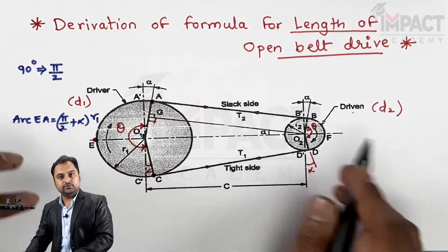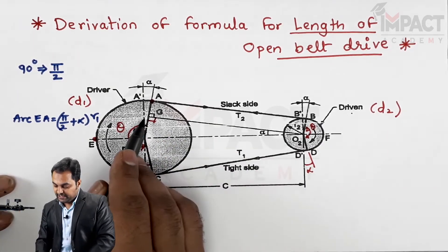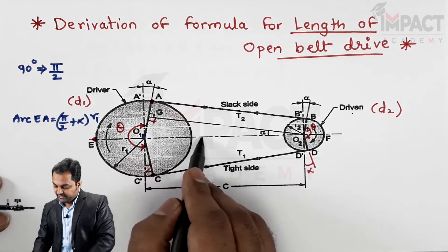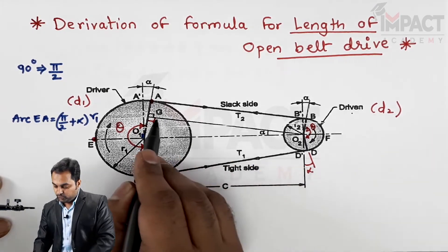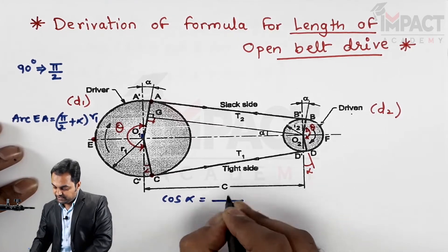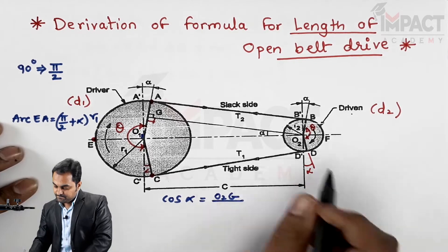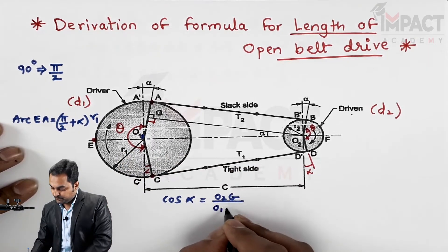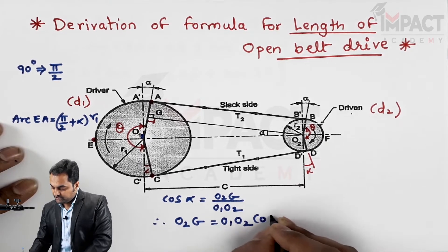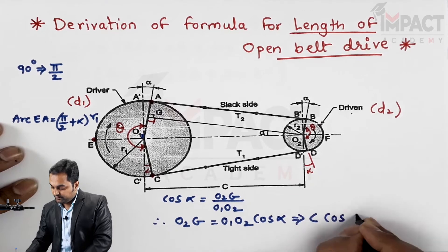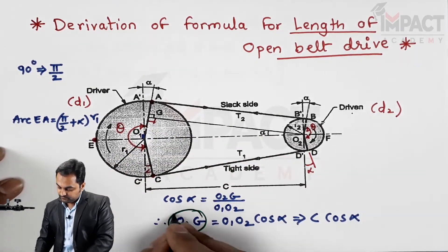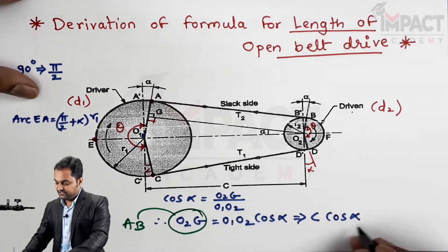For AB, looking at the diagram, AB and O2G are parallel, so I'll find O2G from the triangle. The angle alpha is opposite the 90-degree angle, and O1O2 is the hypotenuse. I need the length of O2G, which is adjacent to alpha, so I use cosine: cos alpha = O2G / O1O2. Therefore O2G = C cos alpha, and since AB equals O2G, AB = C cos alpha.